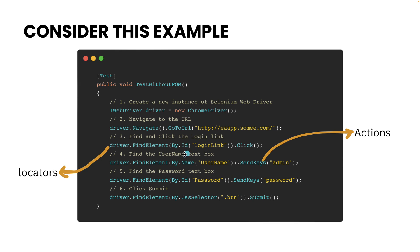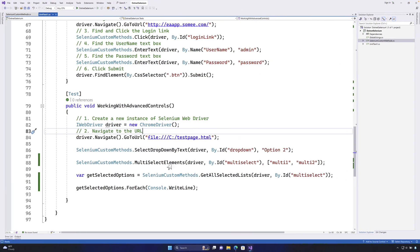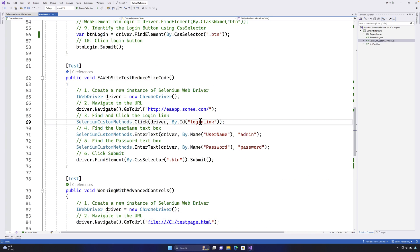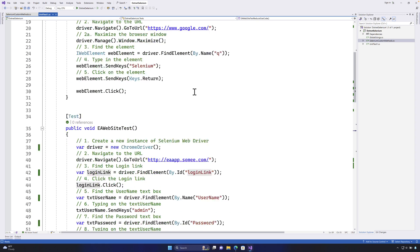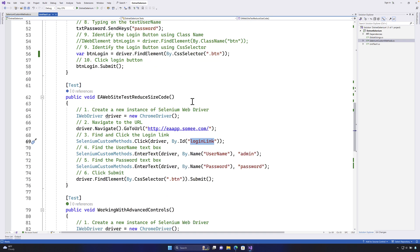You will notice that this locator has hard-coded values like login link, username, and password. These values could potentially change at any point in time. For example, if the developer changes the login link identifier, you have to go back into the code and change the whole test. And if you have copy-pasted the same code in multiple different tests, as you can see, the same login link has been used in more than three tests.